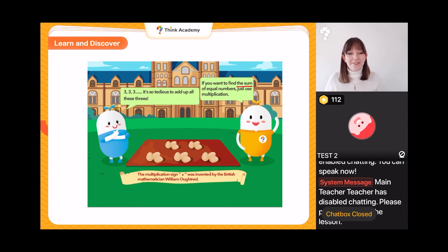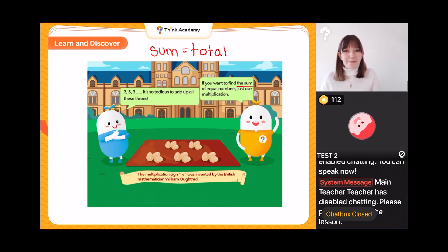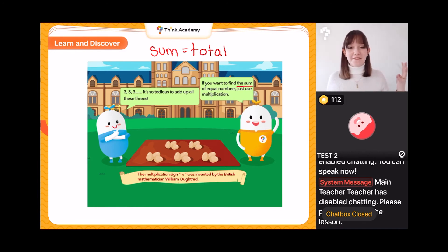All 'sum' means is the total — sum equals total. It means how much do we have altogether. So if I want to find the sum of Pip's Easter eggs, all I want to find is the total number of Easter eggs. That's all it means.